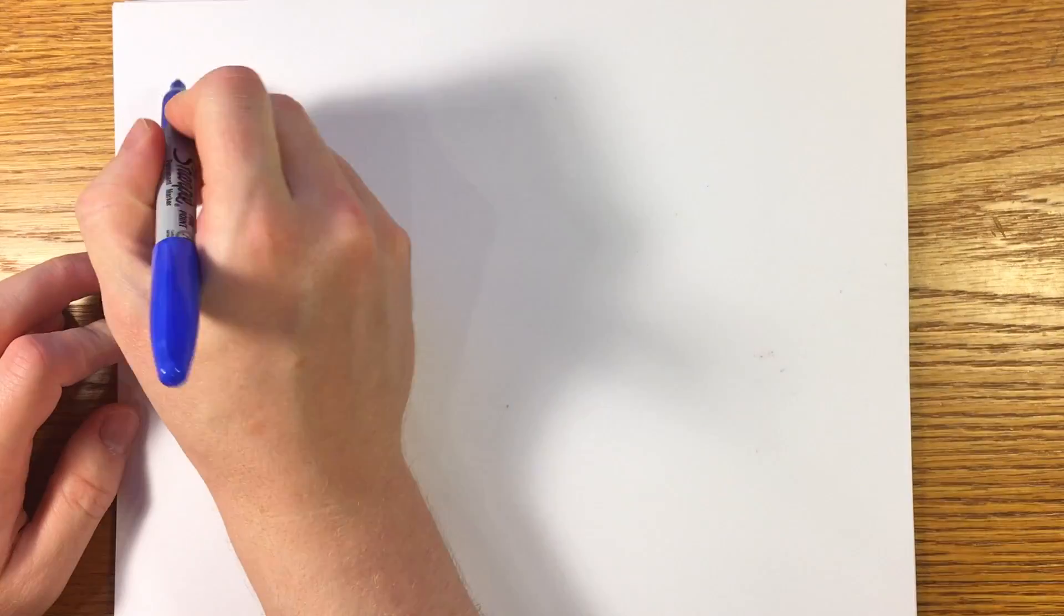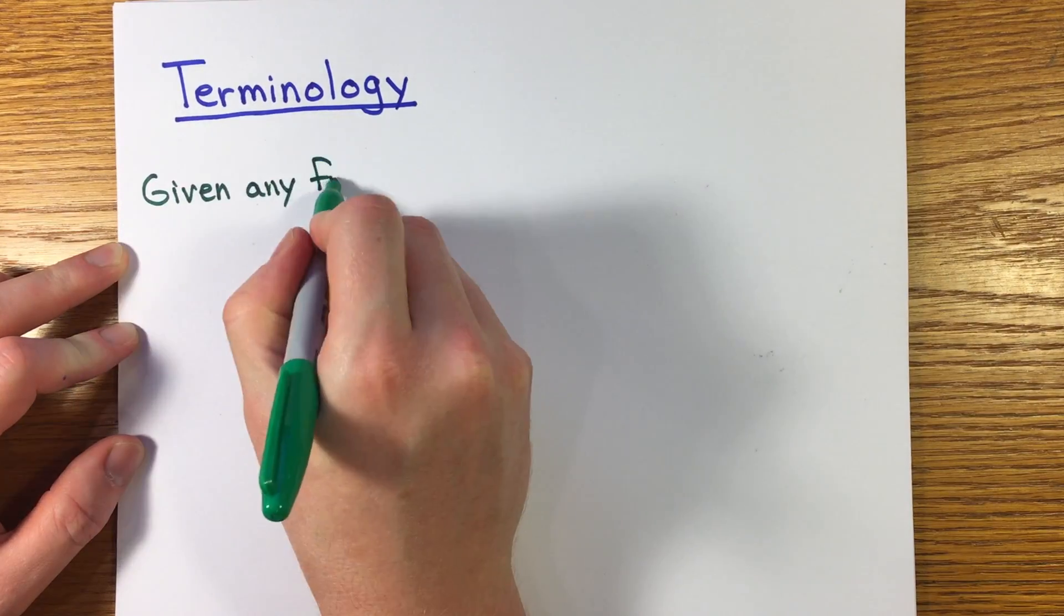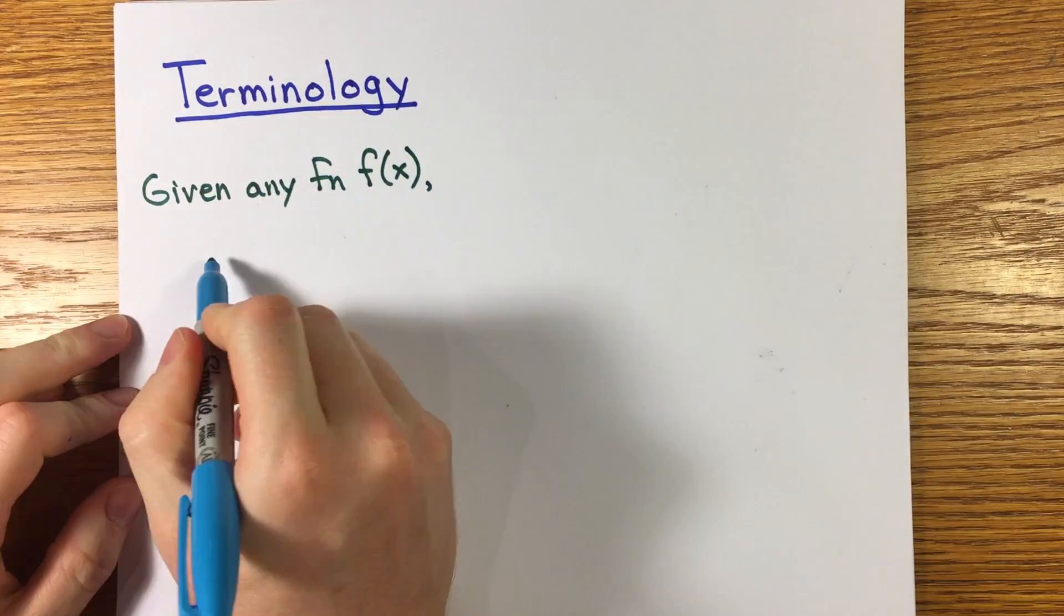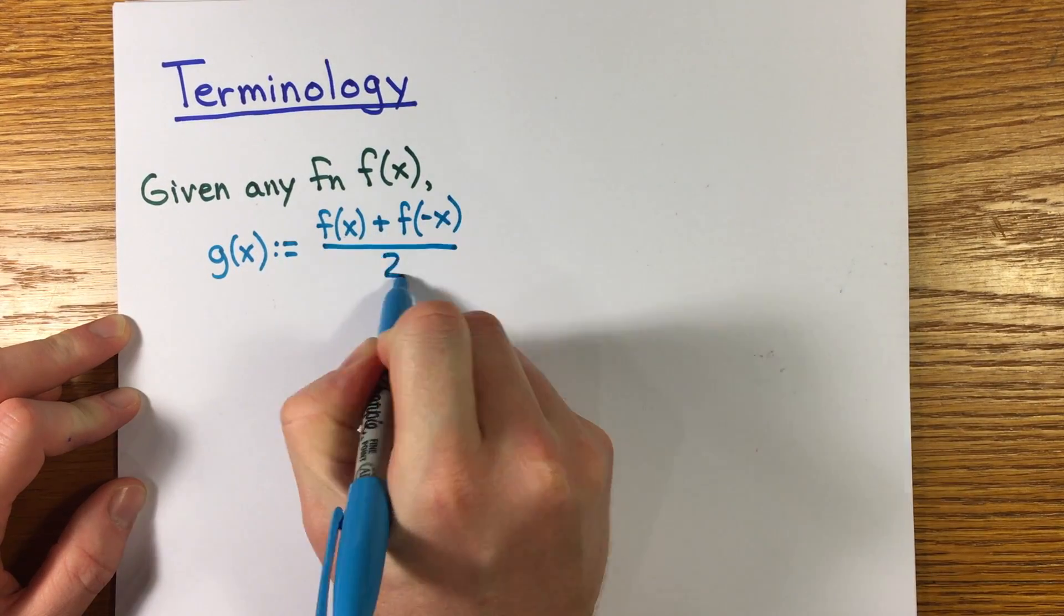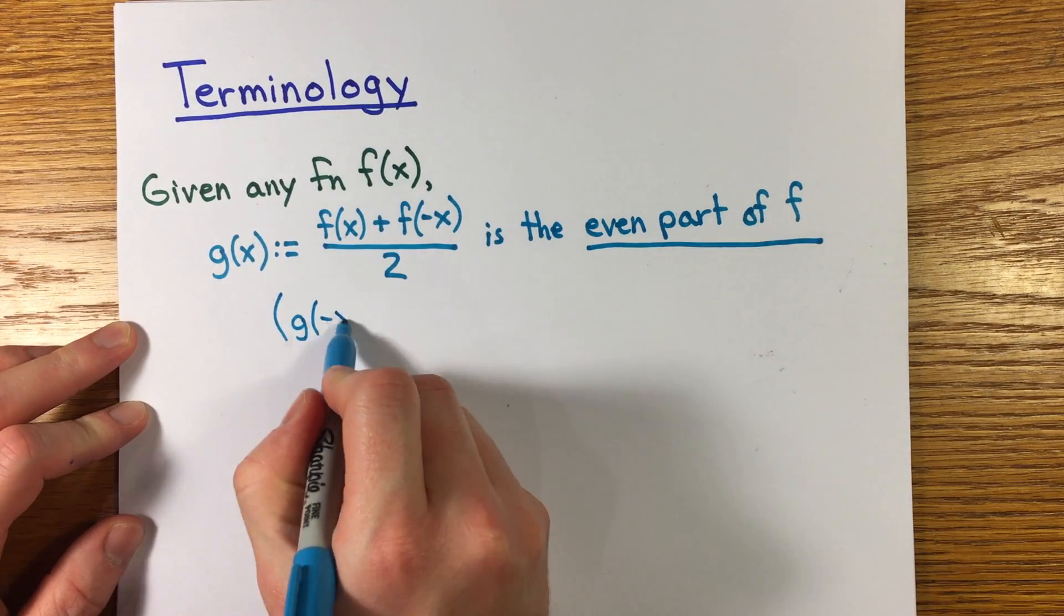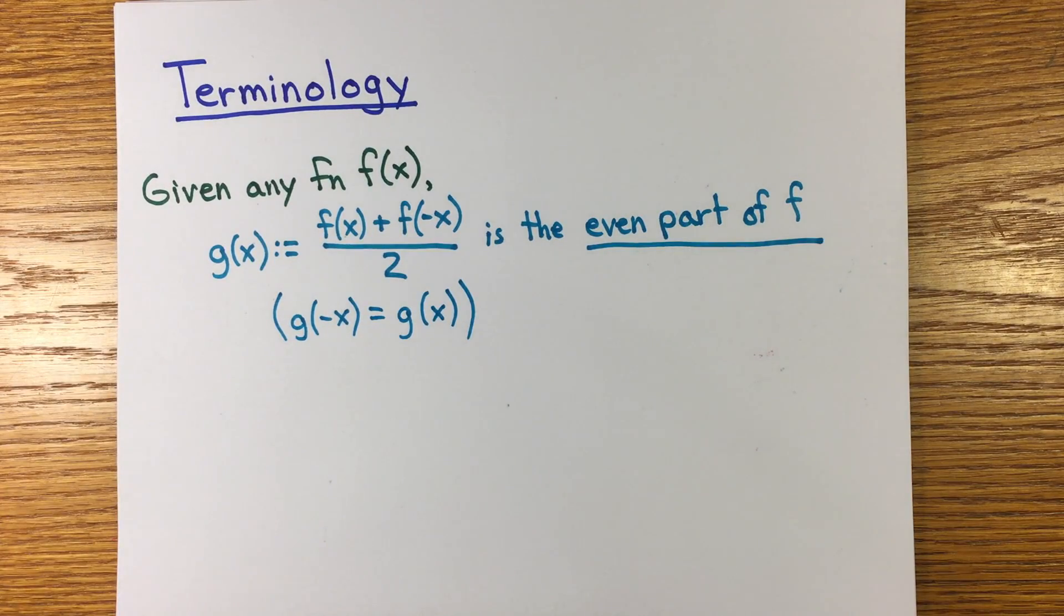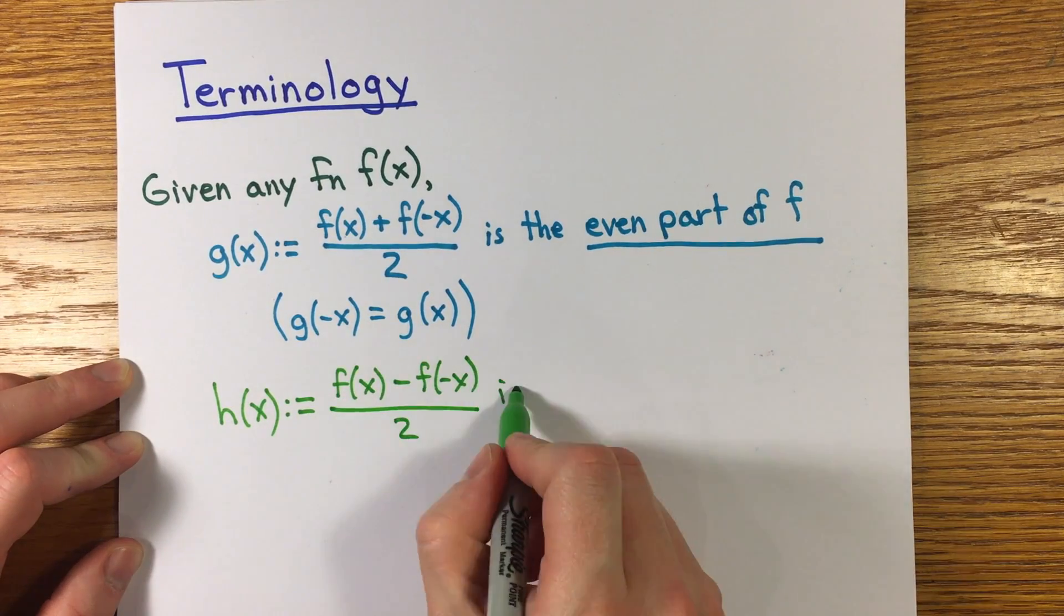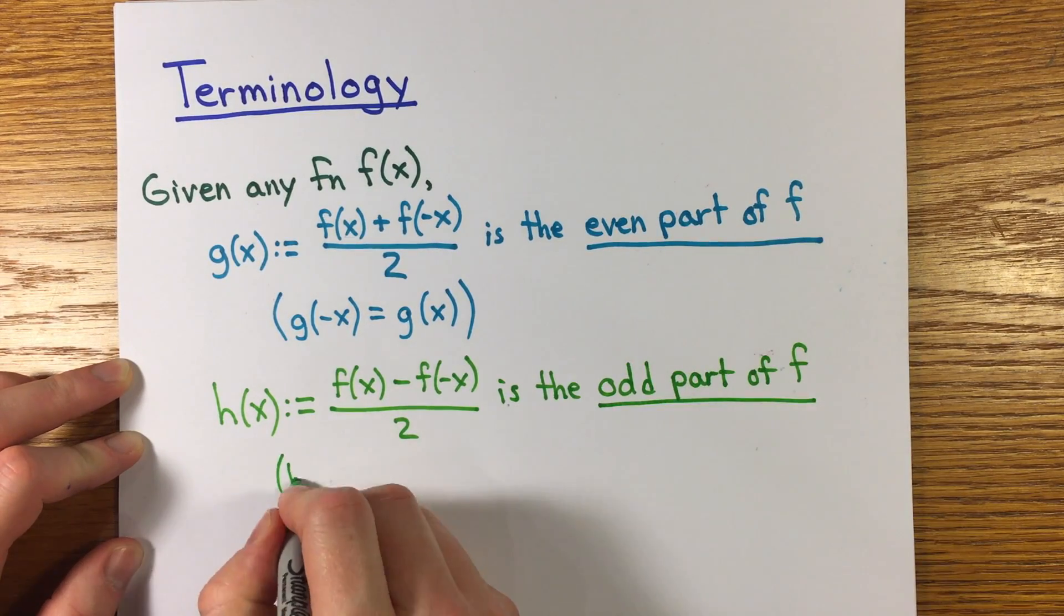So here's some general terminology worth mentioning. For any function f defined on a region symmetric about zero, the combination g of x equals f of x plus f of minus x over 2 is called the even part of f. And h of x equals f of x minus f of minus x over 2 is called the odd part of f.